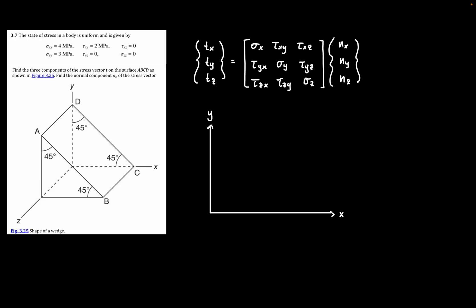We are given the state of stress in the body that is uniform, and it is given by these six stress values. Now, what we need to do is find the three components of stress on the traction vector for the surface ABCD, essentially this surface right here.